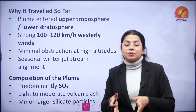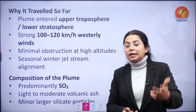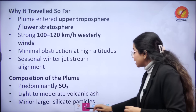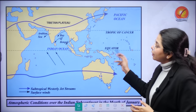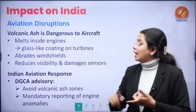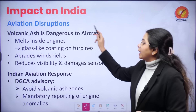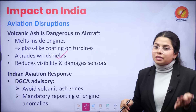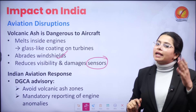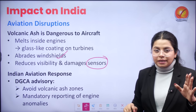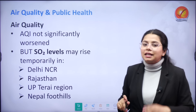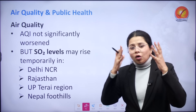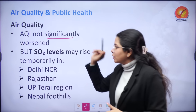The ash was expected to arrive this morning over regions of Rajasthan, Punjab, Delhi, Haryana, and Gujarat, causing a certain amount of haze. In Delhi, where there is already toxic air pollution, there will be a further addition. As an impact on India, there is aviation disruption: volcanic ash is very dangerous for aircraft as it easily melts engine insides, abrades windshields, reduces visibility, and damages sensors. That is why advisories have been issued and multiple flights have been cancelled. Air quality and public health will also be impacted.